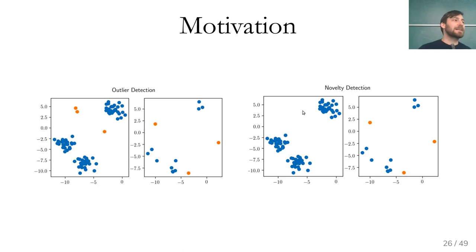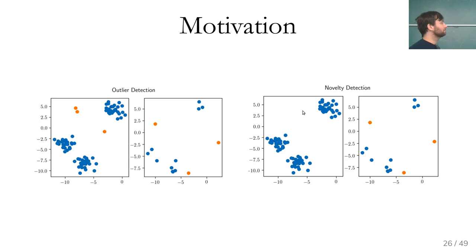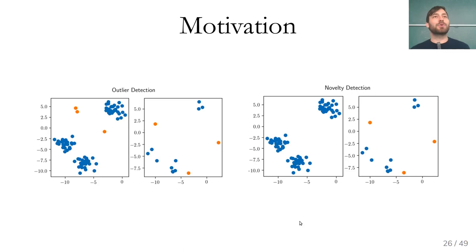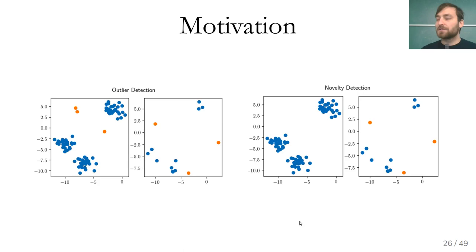The outlier detection setting (contaminated training data) is actually more common, because whenever someone gives you data it's usually dirty. With credit card history, there's no way to know which transactions are fraudulent without checking every one — hence the value of doing this in an unsupervised way. Even when you have ground truth labels, outlier detection can be better than classification: in manufacturing, if something fails in a new way you've never seen, a classifier trained on known failure modes can't detect it, but outlier detection only needs examples of correct behavior.